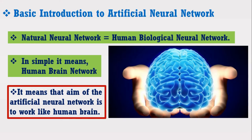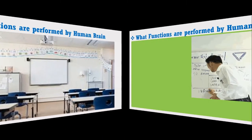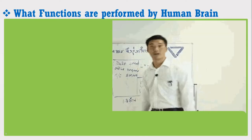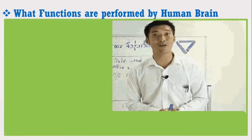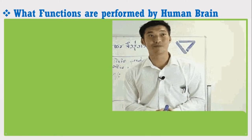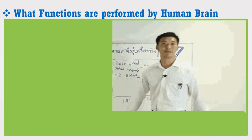The question may arise: what functions are performed by the human brain and how does it perform them? Consider the example of a class where a teacher is delivering a lecture to 50 students, performing the following tasks simultaneously: he is speaking to deliver his lecture, writing on the board at the same time, and also moving his fingers, hands, and legs to move across the board.